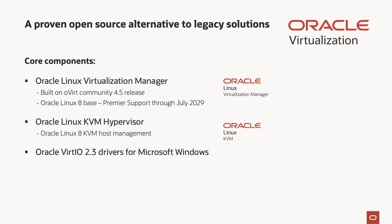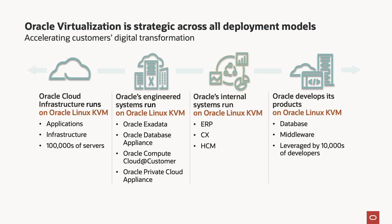The second is Oracle Linux KVM — kernel-based virtual machine — a highly secure and performance-optimized hypervisor built directly into Oracle Linux. KVM offers the flexibility and scalability needed to run enterprise workloads, whether on-premises or in the cloud. Oracle Linux KVM is the same hypervisor Oracle runs as a cloud vendor, which means it's extensively tested and proven in intensive cloud and enterprise environments.